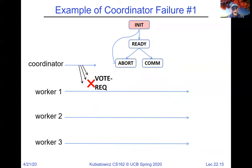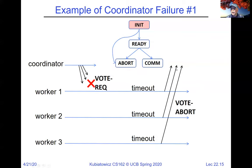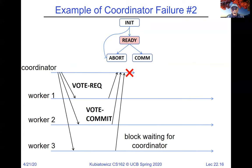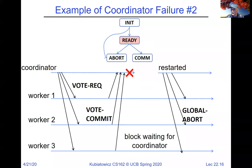Here's an example of the coordinator failing: it sends out vote requests, eventually times out, and all workers might abort in the init stage. Or we send out vote requests, everybody commits, and then the coordinator crashes. At that point, all workers are waiting in the ready state. When the coordinator comes back up, it figures it's missed some messages and just says abort.